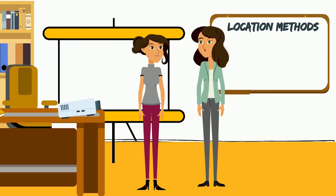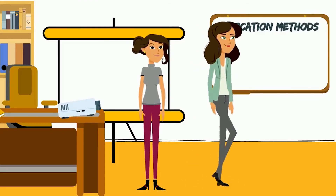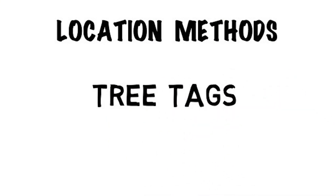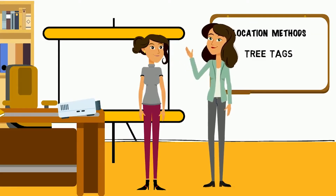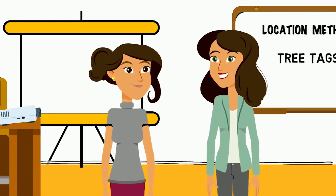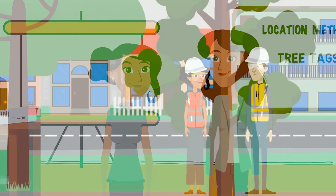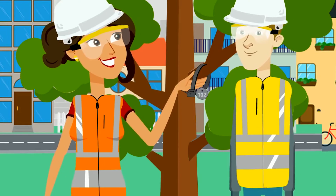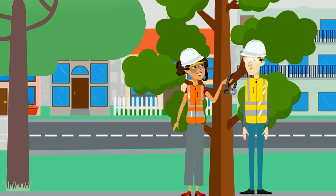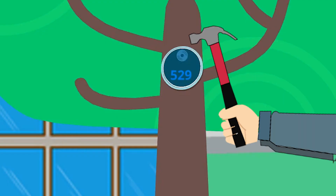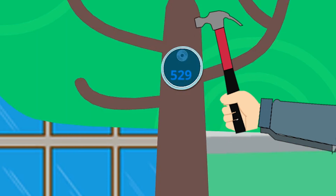Now there are two more location methods to go over. The first is affixing a tag to a tree. This is pretty standard in rural forestry plots used in long-term monitoring, and although urban foresters don't use it a lot, it's a great way to keep track of your trees. For small trees, the tag should be tied around a branch; for large trees, the tag should be nailed into a trunk.